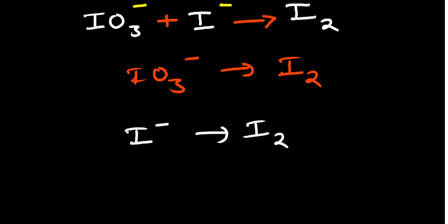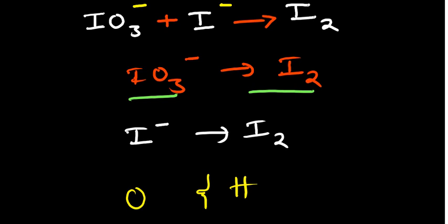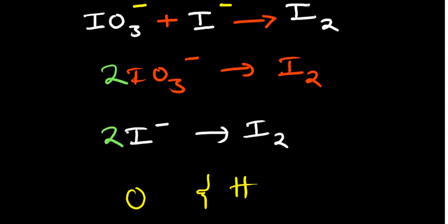Using the ion-electron method, the first thing you do is balance all atoms other than oxygen and hydrogen. Starting with the first half reaction, the only other atom we have besides oxygen and hydrogen is iodine. We have two iodine on the right hand side and one on the left, so we add a coefficient of two on the left. For the second half reaction, we have one on the left and two on the right, so we also add a two.